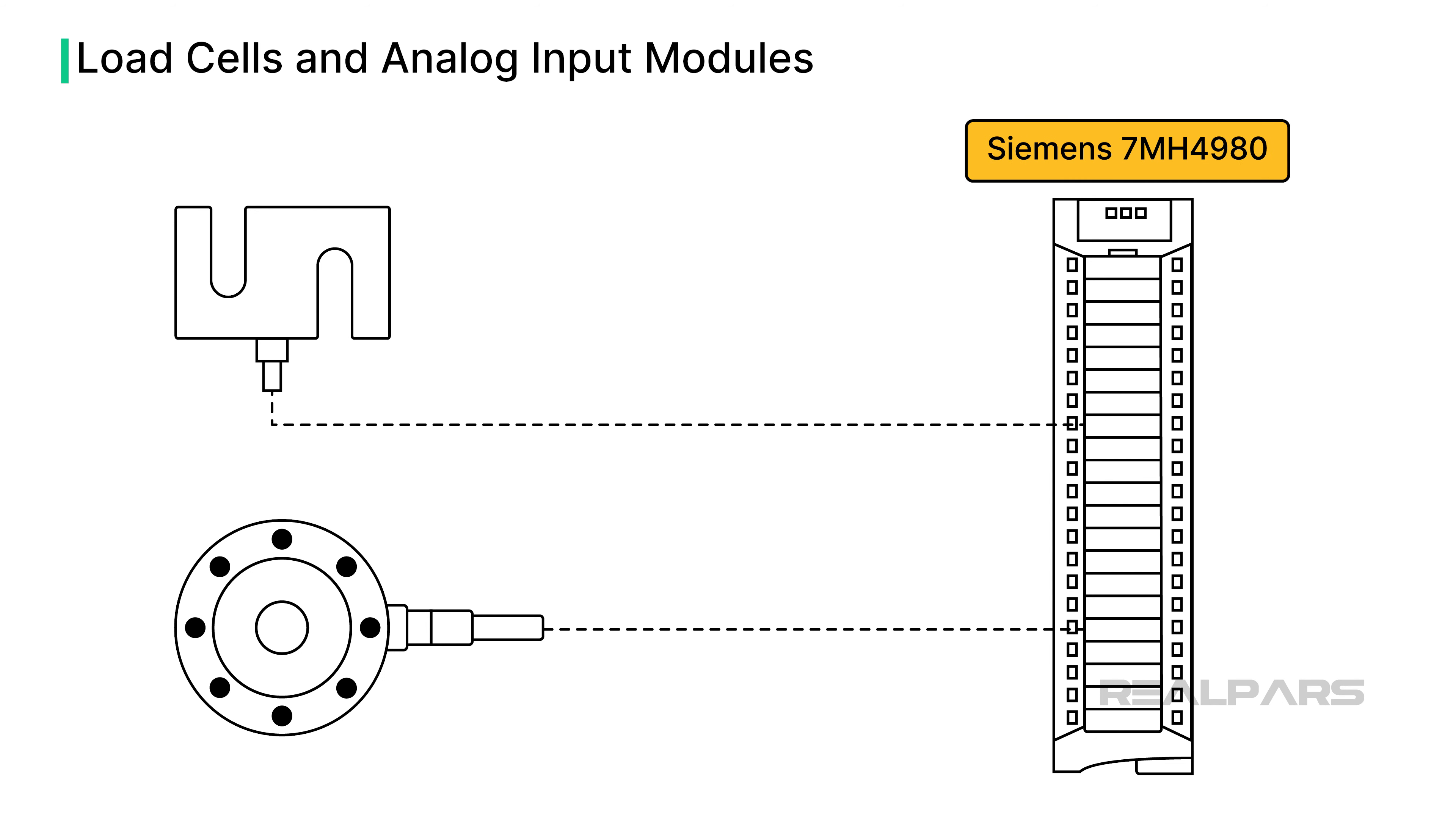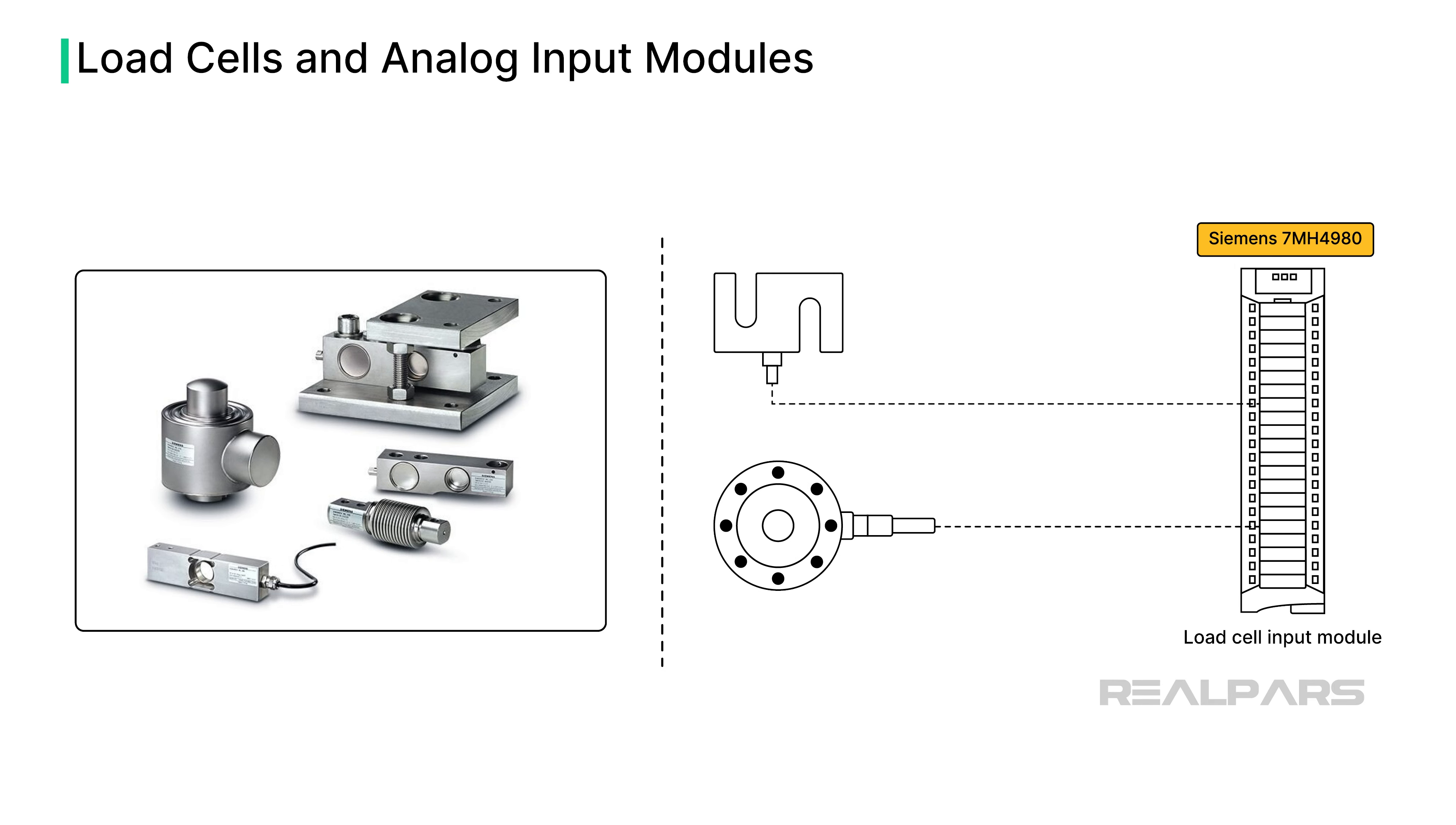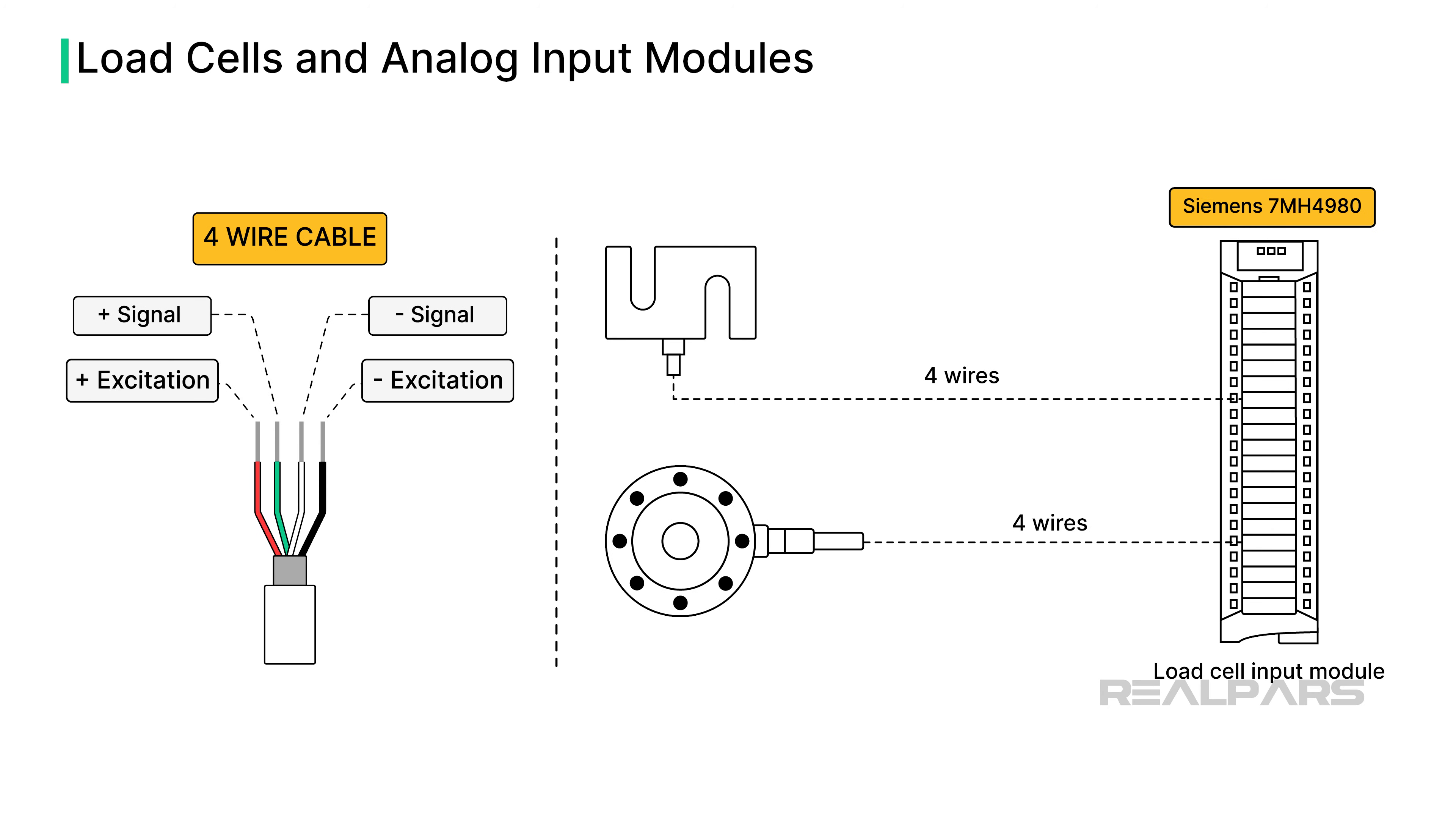Let's discuss the Siemens 7MH4980, an analog input module connecting directly to a load cell. This type of module is often called a Load Cell Input Module. Load cells come in different shapes and sizes, depending upon their application, but they all have at least four wires. Two wires are for excitation, and two are for the resulting signal.